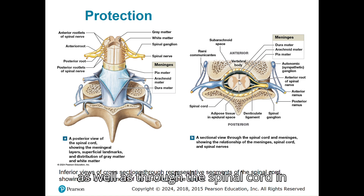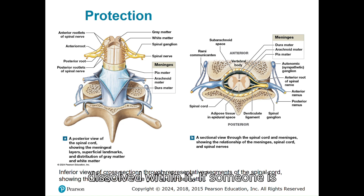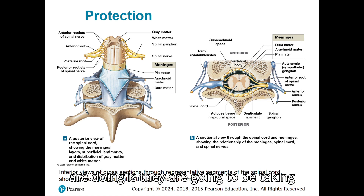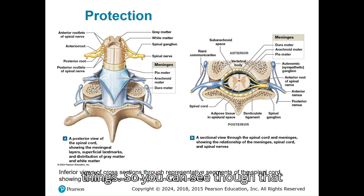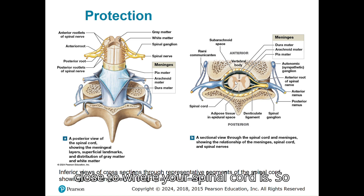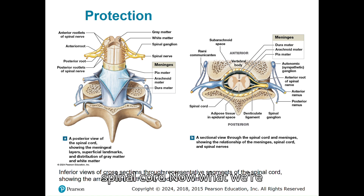The subarachnoid space is filled with CSF — cerebrospinal fluid — going around the spinal cord as well as through it in the central canal. The cerebrospinal fluid contains gases, nutrients, and waste dissolved within it. If someone is receiving a lumbar puncture, or spinal tap, doctors take a needle and extend it until they get into the subarachnoid space, then extract the CSF to test it for different things. That subarachnoid space is very close to where the spinal cord is, so it's extremely important for them to be careful not to penetrate past the subarachnoid space and actually hit the spinal cord itself.